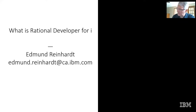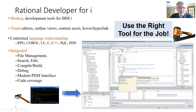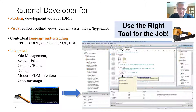Hello and welcome to today's introduction to Rational Developer for i. My name is Edmund Reinhart and I've been a product architect for a number of years. I'm happy to introduce you to this tool that is known to save people about 20 to 25 percent productivity over current green screen techniques. If you have been using green screen techniques like SEU and SDA, it's really time to move forward to the current millennium. It's like using an automated tool instead of the old hammer and nails.